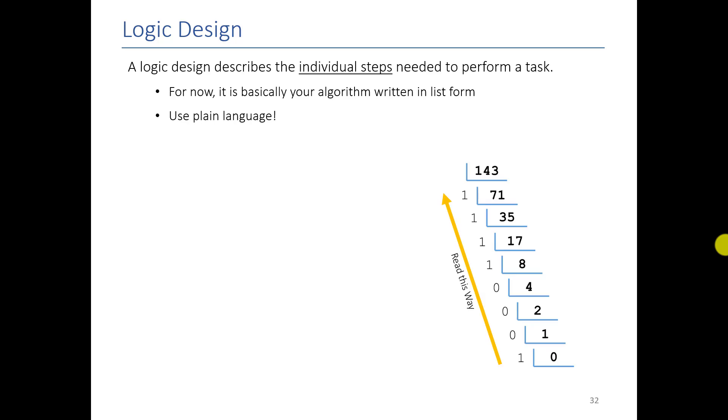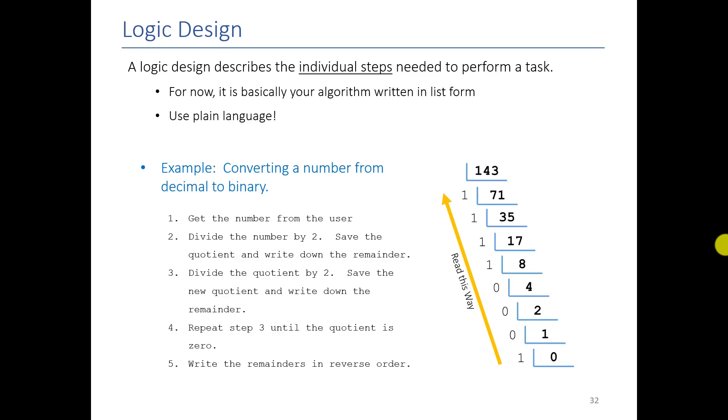So the way we do that is with what we are going to call in this class a logic design. And logic designs are nothing more than just a list of steps that tell you how to accomplish the task. So I'm showing you here, for example, one way to do this. If we got a number from the user, we divide the number by two, we save the quotient, write down the remainder, divide the quotient by two, save the new quotient, write down the remainder, and keep repeating this step over and over until our quotient is zero, and then write the remainders in reverse order. If you followed that step, no matter what decimal number I gave you, you would be able to convert it into binary. And like I said, for this lesson, I just want you to be exposed to it. But as we go on further, you're going to have to write your own logic designs. And these logic designs are what we are going to use as the basis for all of our Python code.